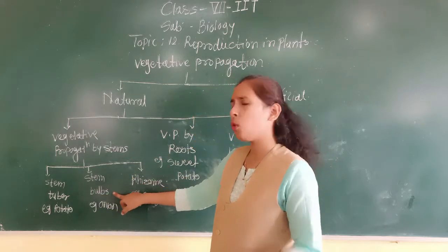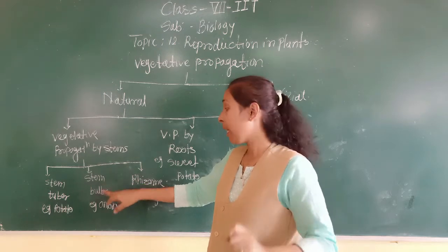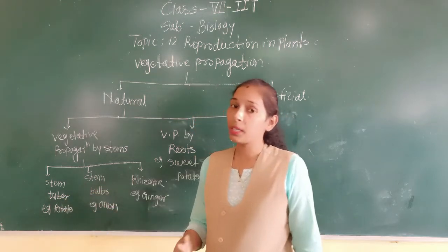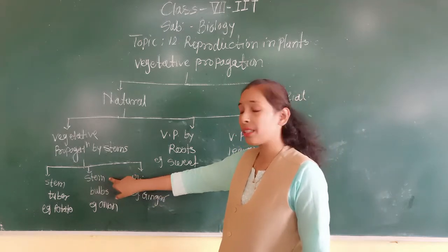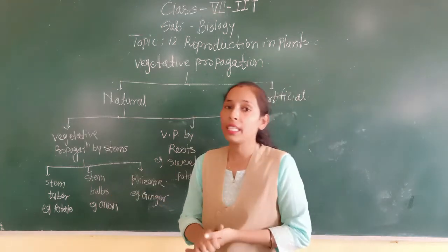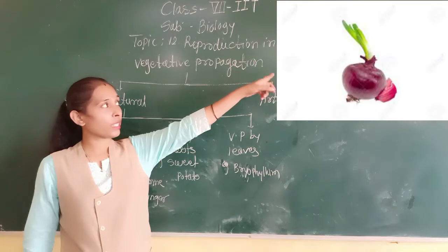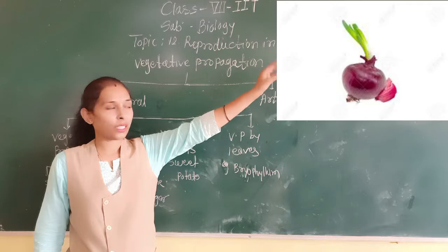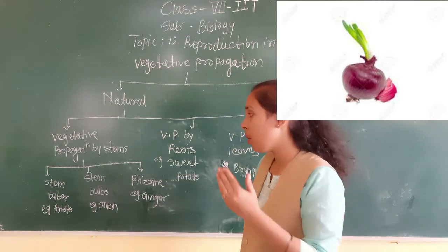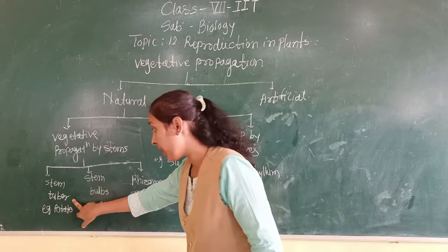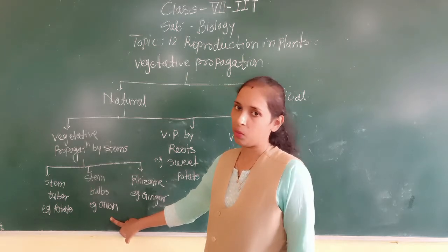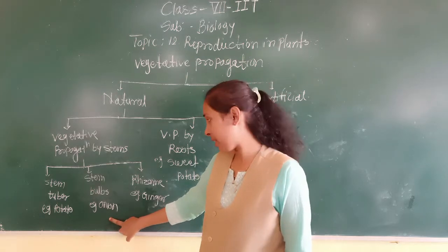Next, we discuss stem bulb. What is meant by a bulb? It is also an underground stem — for example, onion. Why is it called a bulb and not a tuber? Because it is an underground stem which contains a bud, but that bud is present inside it. In the innermost part of the onion there is a bud which grows as a new individual. That is why onion is called a stem bulb — because the bud is present inside the stem.